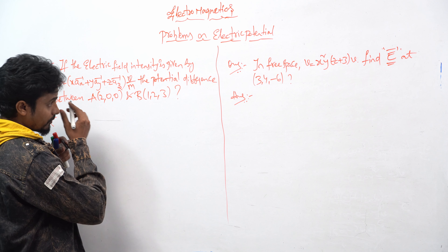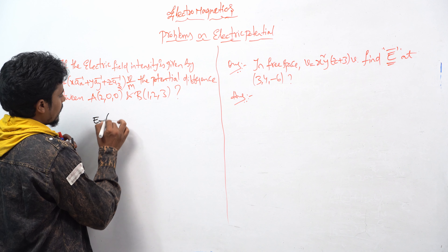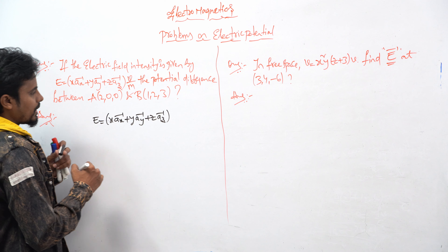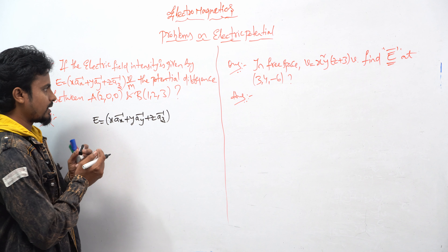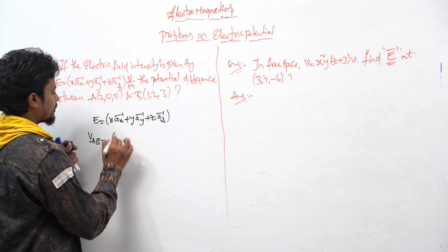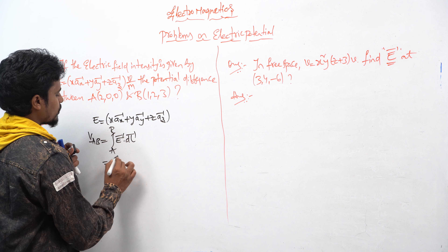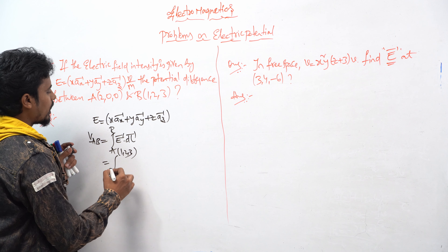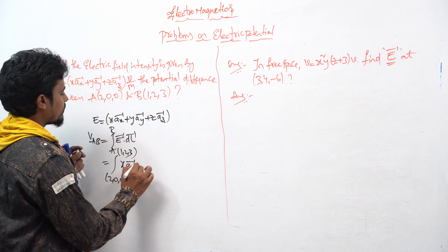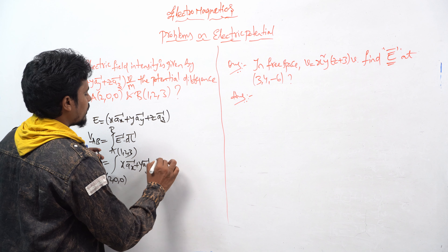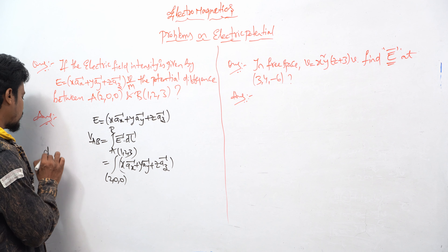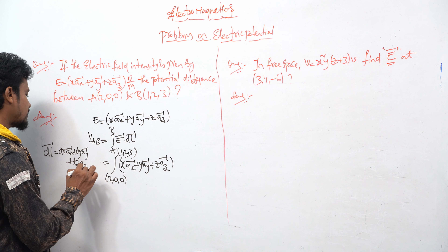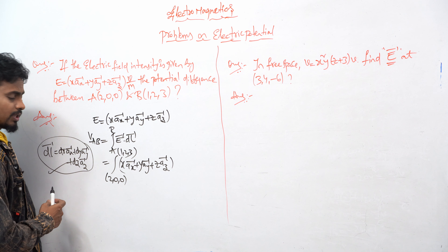You already know what the electric field is: E = x·ax̂ + y·aŷ + z·aẑ. And you already know how you can find the potential difference and how you can write it in the differential length. The differential length dl̄ = dx·ax̂ + dy·aŷ + dz·aẑ. This will be the formula — you have to substitute that formula here.